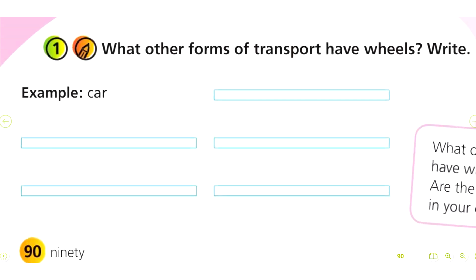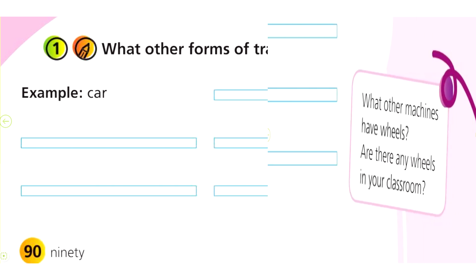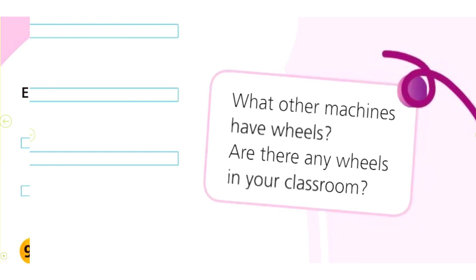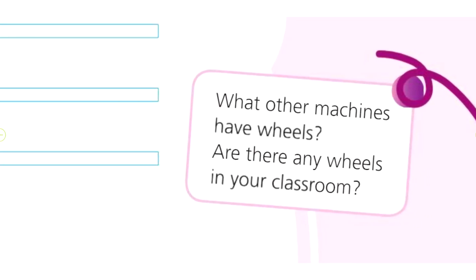Activity 1. Page 90. What other forms of transport have wheels? Write your examples — for example, car. What other machines have wheels? Are there any wheels in your classroom?